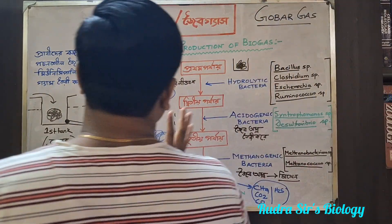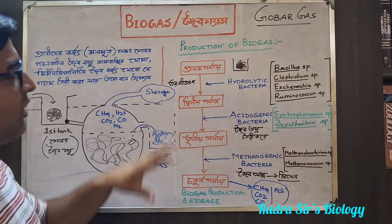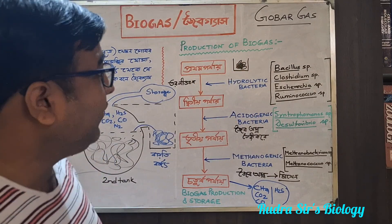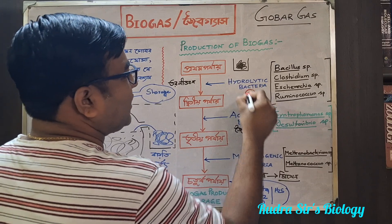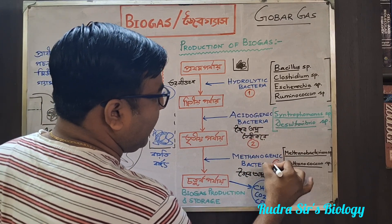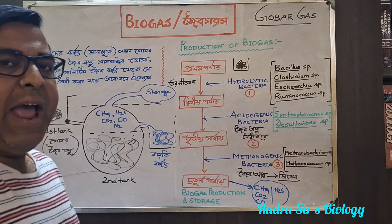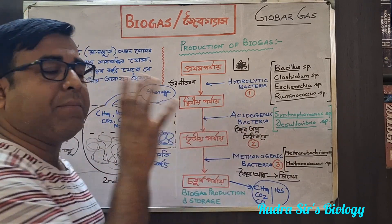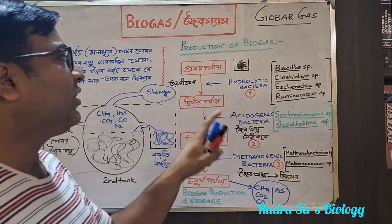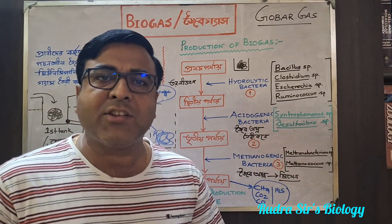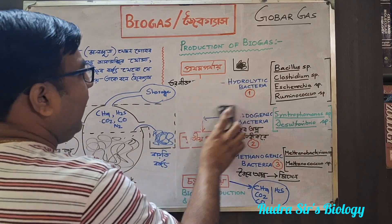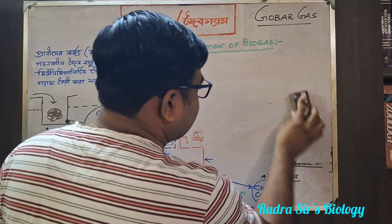So this is the process of production of biogas. There are three types of bacteria: hydrolytic bacteria, acidogenic bacteria, and methanogenic bacteria. These three types of bacteria do this work. Even in biogas production, three types of bacteria are used — hydrolytic, acidogenic, and methanogenic — meaning this produces methane gas. This methane gas producing bacteria is the ultimate step in producing biogas in this process.